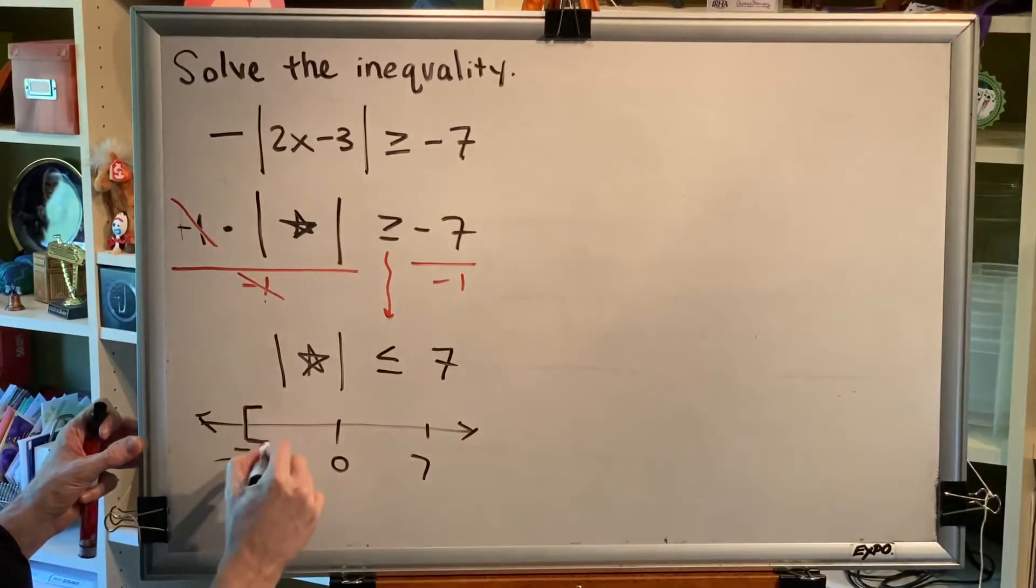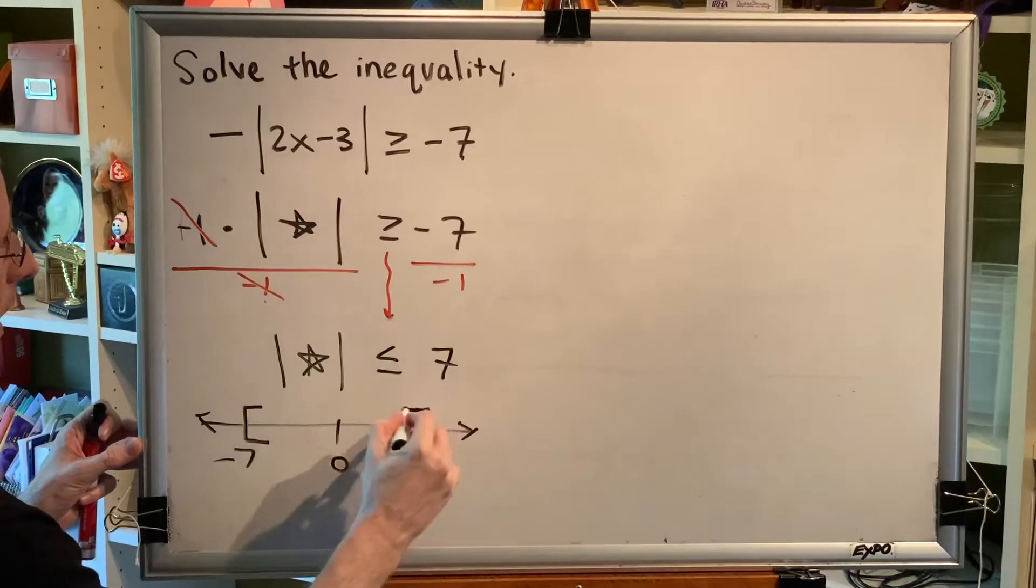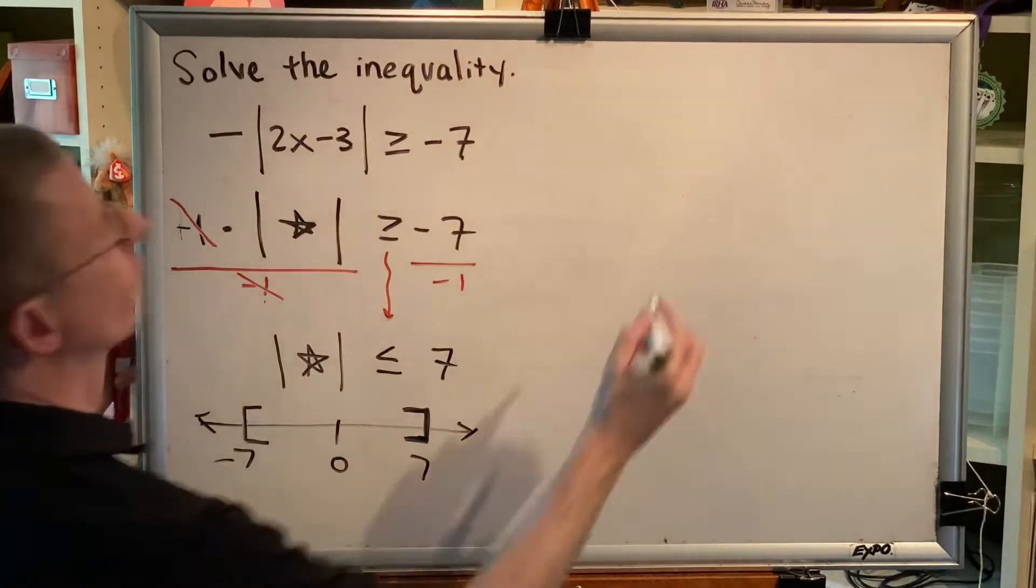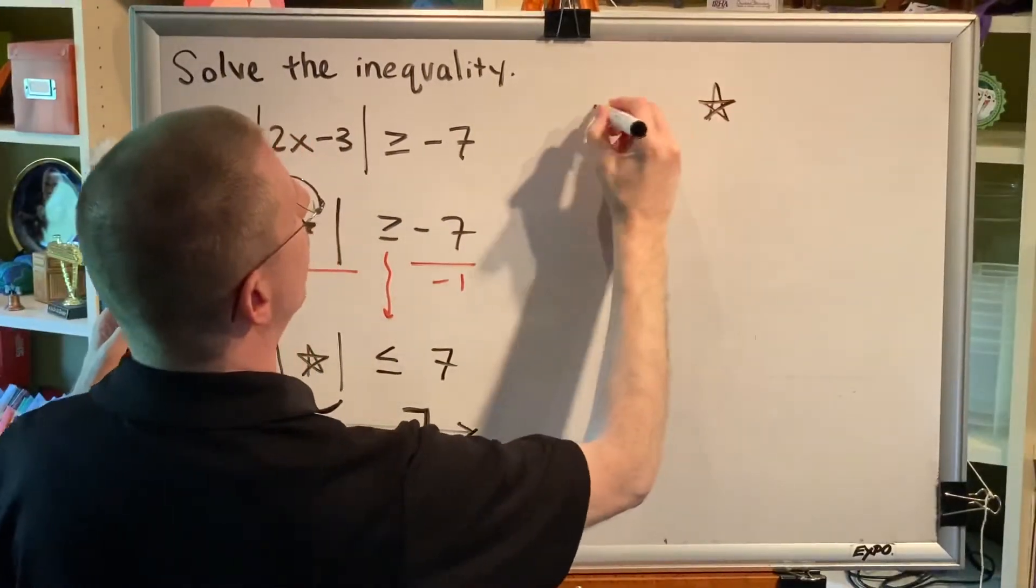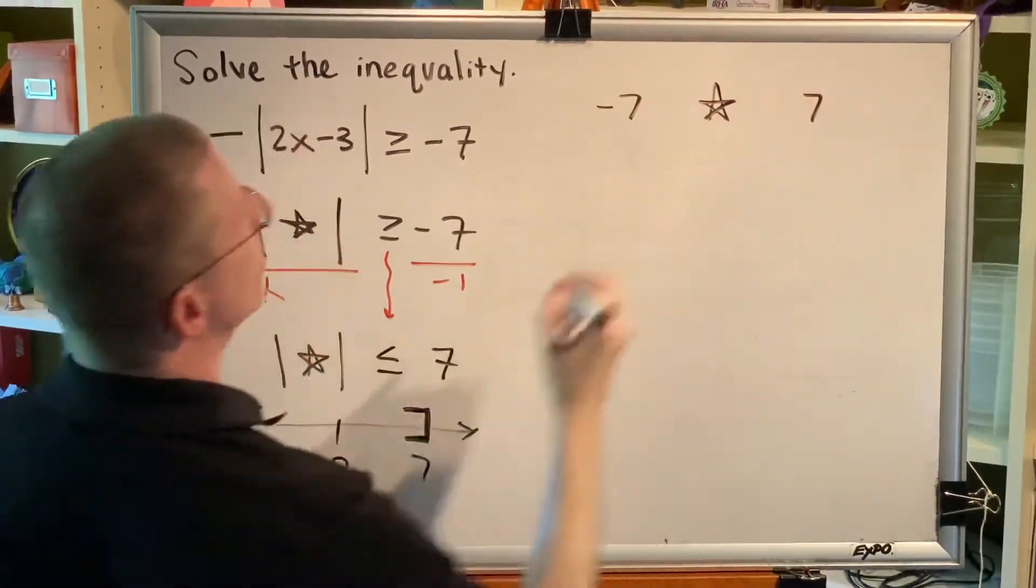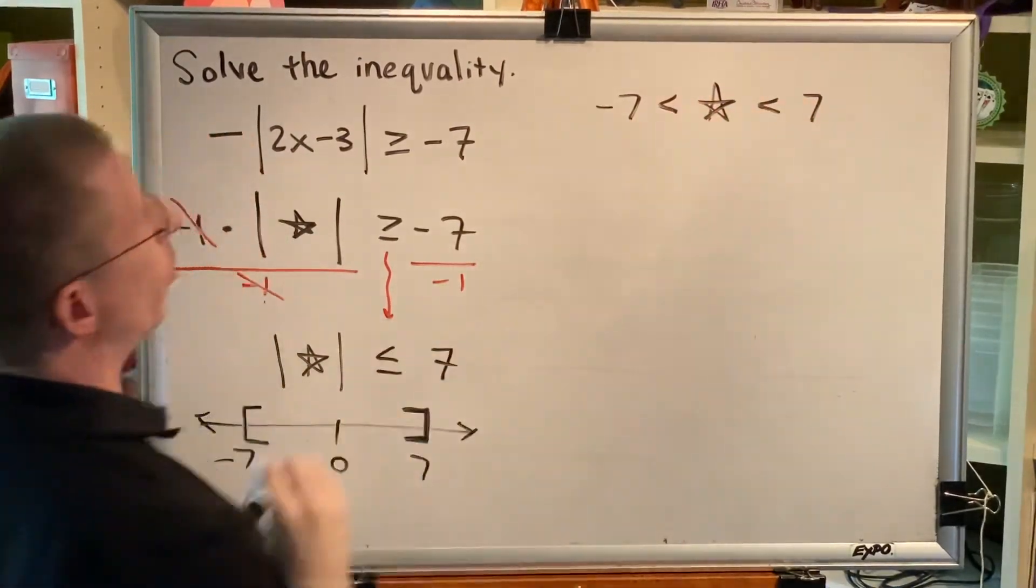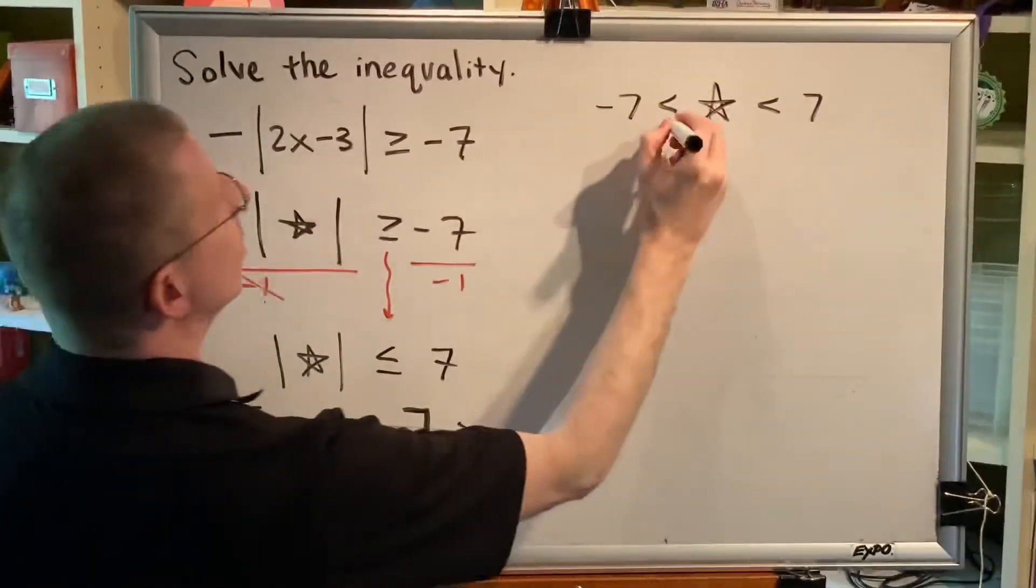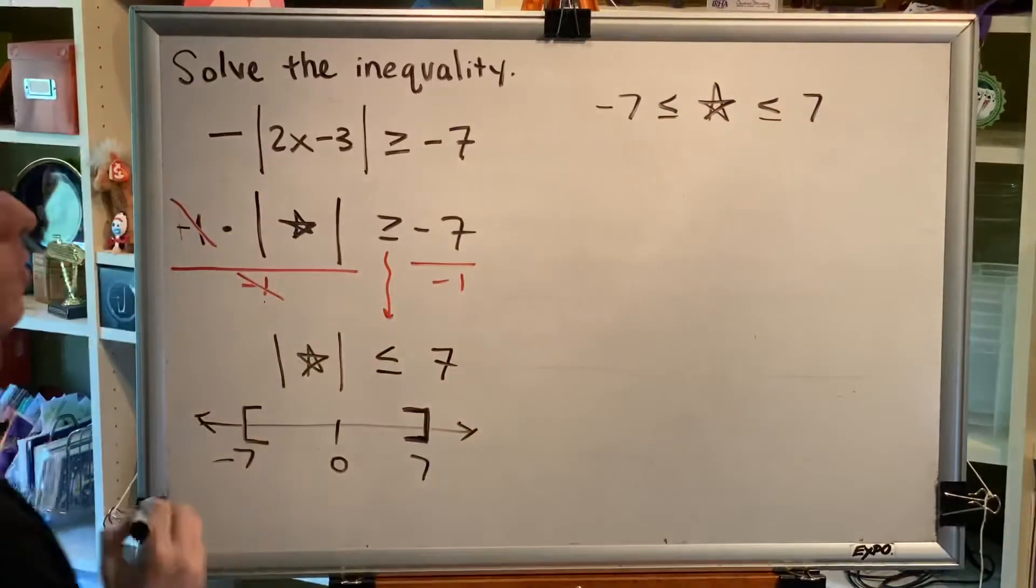So, I could have the dog anywhere between these two spots, anywhere between negative 7 and 7. And when I write that as an inequality involving star, I put star in between negative 7 and 7. I get my less than type symbols in both places. And because this problem says or equals and we have brackets, these are both or equals type.